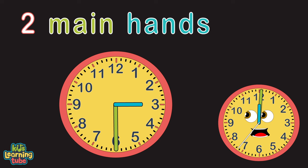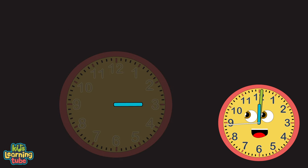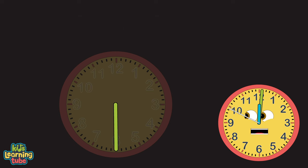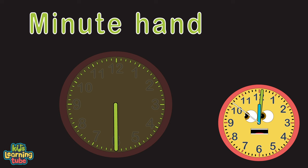I have two main hands as you plainly see. They do two different things while they turn around on me. The small hand is for the hours, there are 12 on my face. And the big hand is for minutes, filling the place between the hour space.